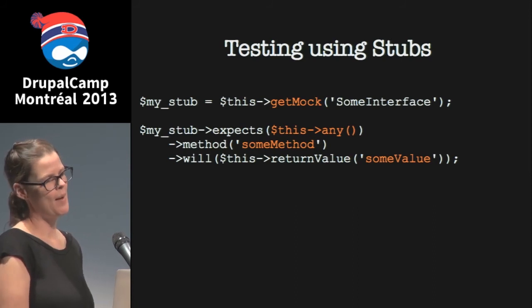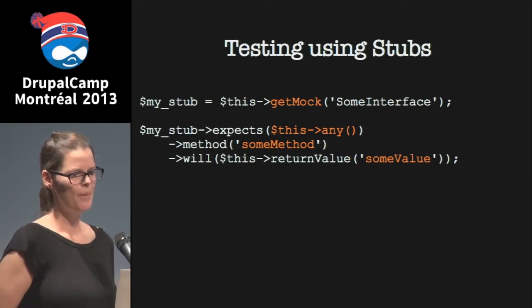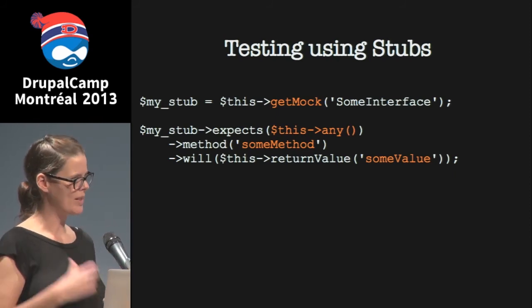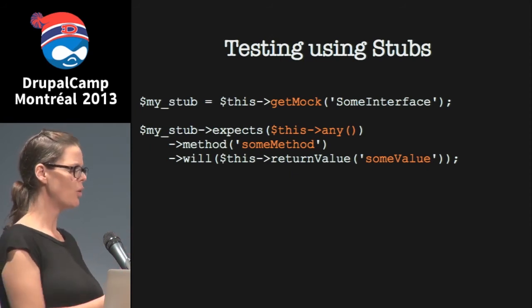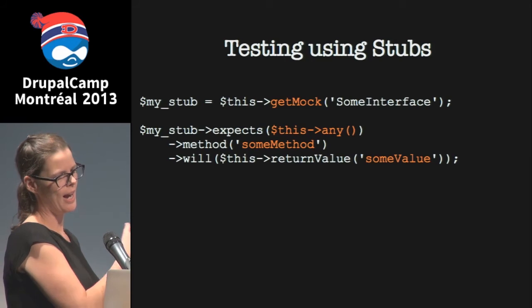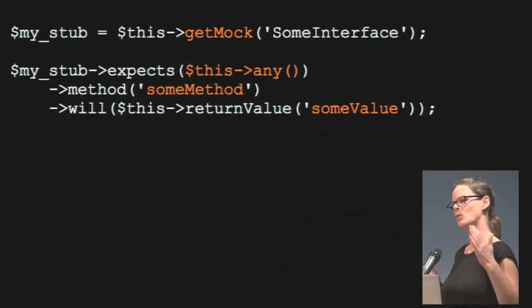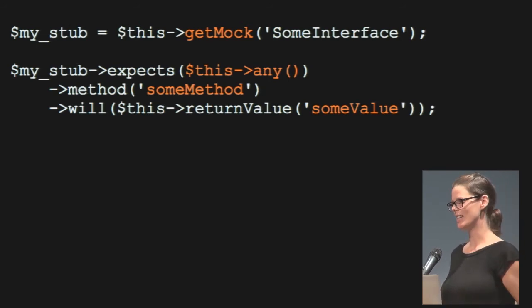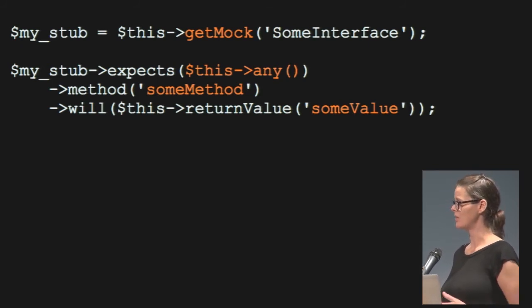Stubs are about providing these canned responses — your class is going to interact with something, and you set it up so you know what methods it's going to call and provide canned responses to those methods. We still use the getMock method in PHPUnit, but we're using it as a stub. The difference between a mock and a stub is just in how you use it.